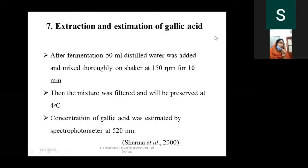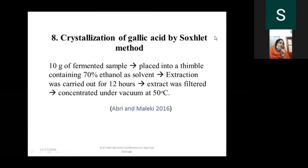After fermentation, gallic acid was extracted by adding 50 ml of distilled water and mixing at 150 rpm for 10 minutes. The mixture was filtered and the filtrate analyzed for gallic acid using the rhodanine method of Sharma et al., with readings taken at 520 nm. After optimization of all conditions, gallic acid was crystallized using the oxalate method.